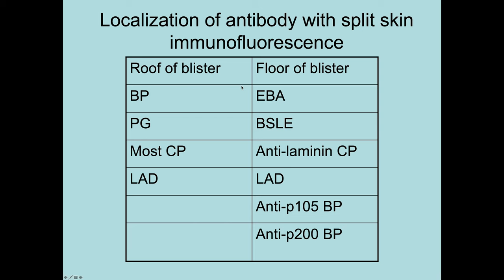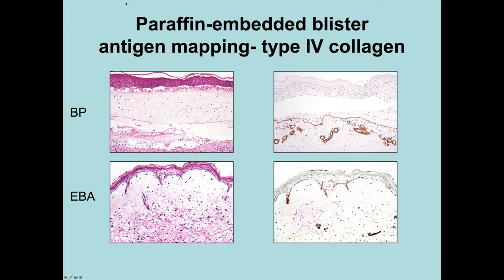I am also keen on using antigen mapping to distinguish these two diseases — it is very simple. Using an antibody to type 4 collagen on paraffin-embedded material: in bullous pemphigoid, the blister develops between the lamina densa and the keratinocyte, so the blister is in the lamina lucida and the type 4 collagen lines the floor. In EBA, the roof of the blister is occupied by type 4 collagen, so the blister is sub-lamina densa. A simple paraffin-based antigen mapping differentiation between the two diseases.